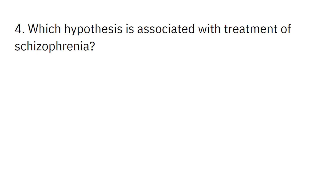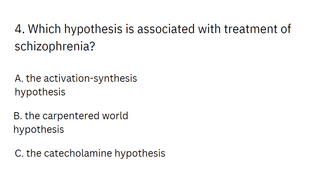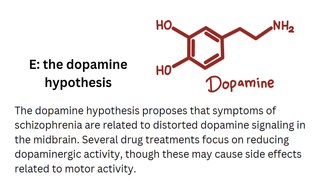Which hypothesis is associated with treatment of schizophrenia? Options include the Activation Synthesis Hypothesis, the Carpenter World Hypothesis, the Catecholamine Hypothesis, the Serotonin Hypothesis, and the Dopamine Hypothesis. And this would be E. The Dopamine Hypothesis. The Dopamine Hypothesis proposes that symptoms of schizophrenia are related to distorted dopamine signaling in the midbrain. Several drug treatments focus on reducing dopaminergic activity, though these may cause side effects related to motor activity.